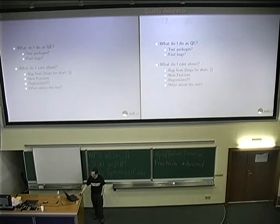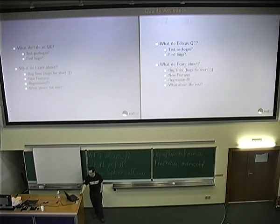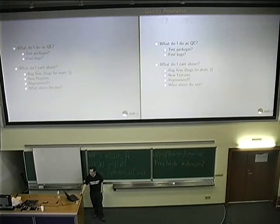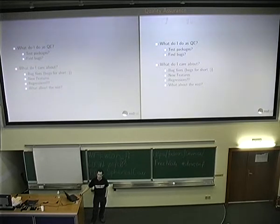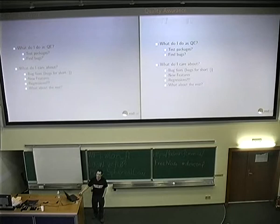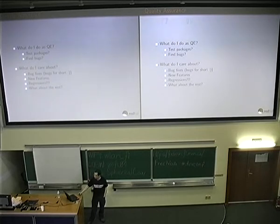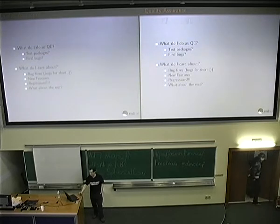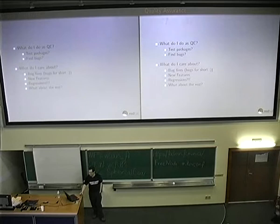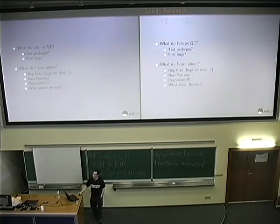The second thing I care about are features. And the third thing, and in my opinion the most important, are regressions. I guess you all know what a regression is — it's a bug where in a previous version it worked and now it doesn't. This is the most important thing. Unless it's something really important or a security issue, I don't care that much about the rest, because if there's been some minor bug for 10 years and nobody cares, it's unlikely anybody will care next year.